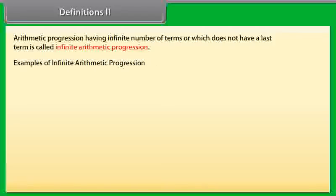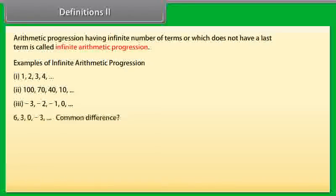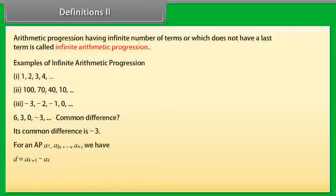Here are some examples of infinite arithmetic progressions. Look at this sequence now. Can you tell its common difference? Yes, you are right. Its common difference is minus 3. In general for an AP, A₁, A₂ and so on till Aₘ, we have D as Aₖ₊₁ minus Aₖ.